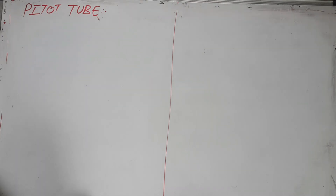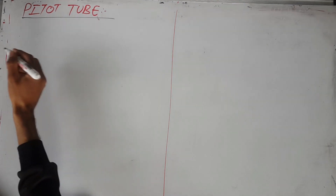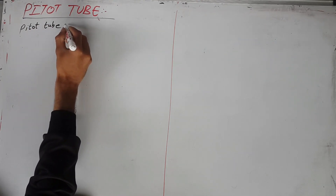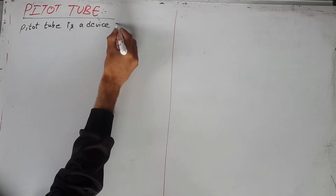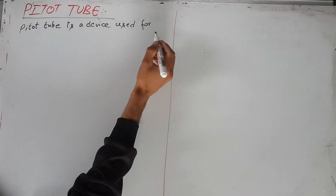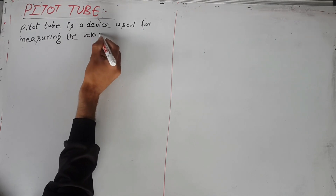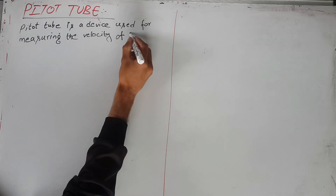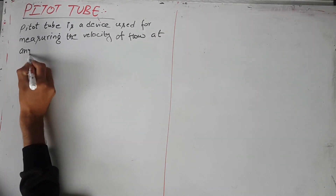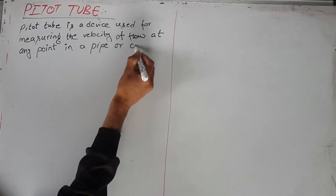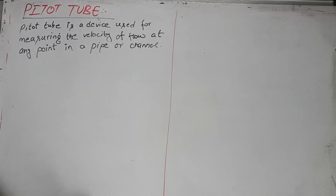Here we go with the pitot tube. What is a pitot tube? A pitot tube is a device used for measuring the velocity of flow at any point in an open channel. Simply put, it is a device that measures the velocity of flow.